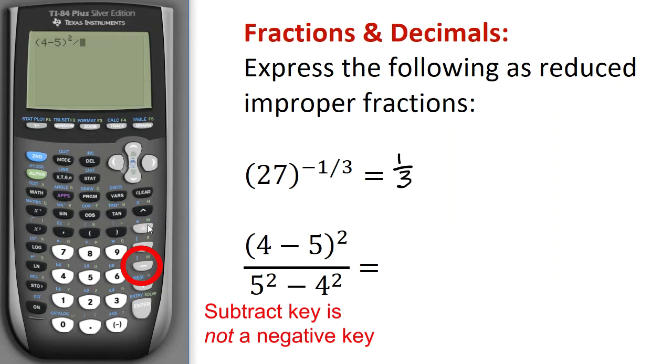And now I'm going to use divide. I've got to have everything in the numerator enclosed in parentheses, otherwise it'll use the order of operations and think it's 4 minus 5 squared divided by 5 squared, and that's not what we want. So I have 5 squared minus 4 squared, and I hit Enter.